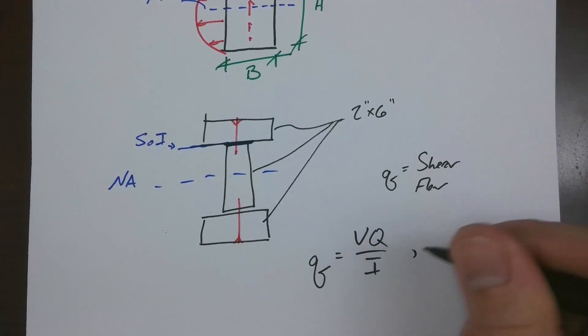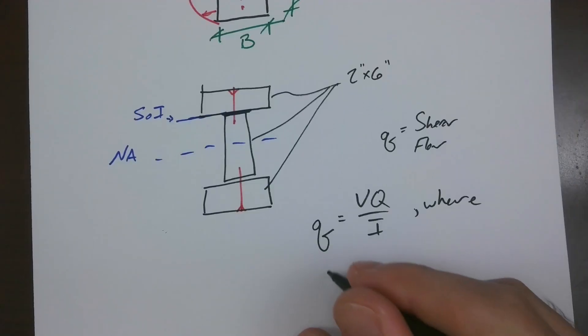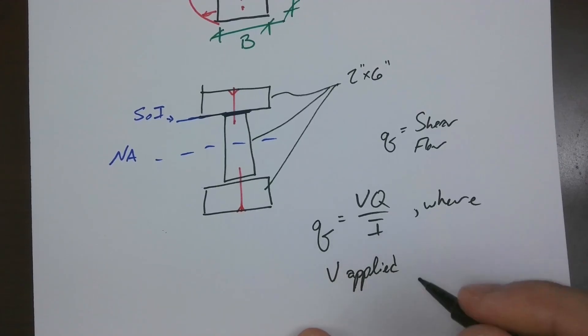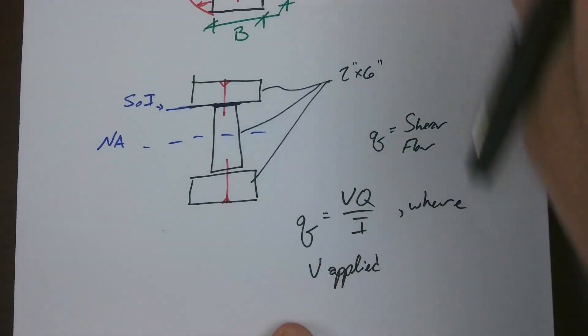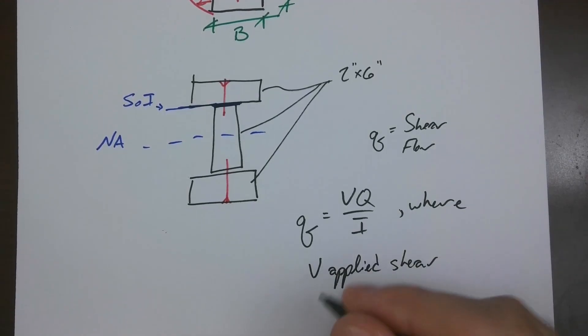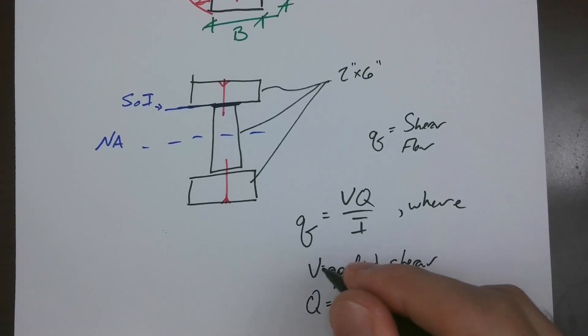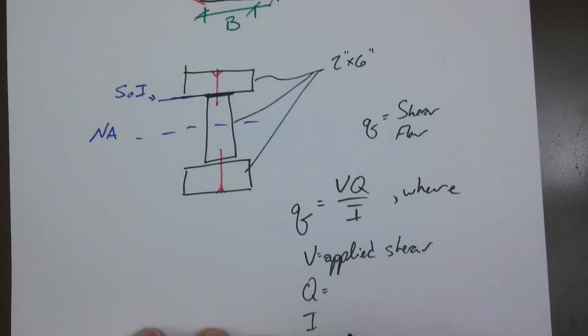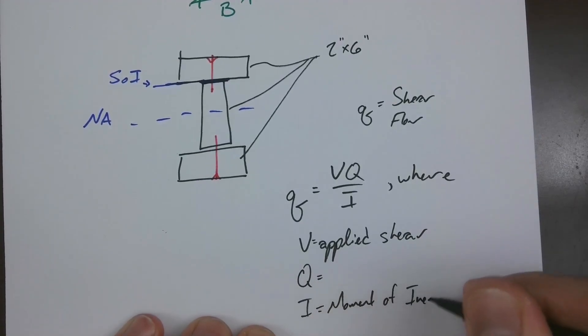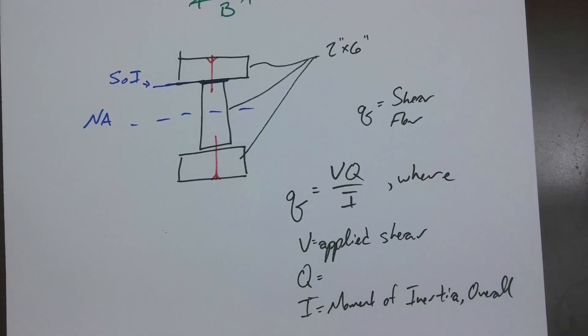In a simple span, this is going to be maximum at the ends of the beam. Q, we'll come back to in a second. I should be familiar. I is your moment of inertia overall. So I is the moment of inertia assuming that your section is acting compositely, right?